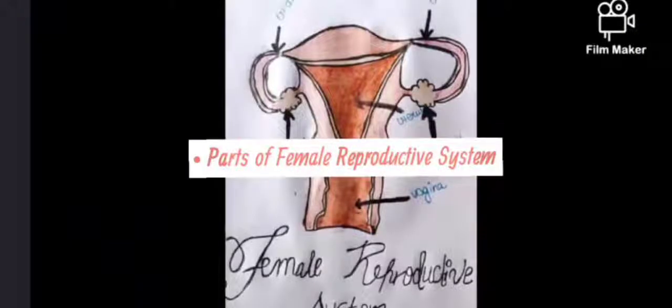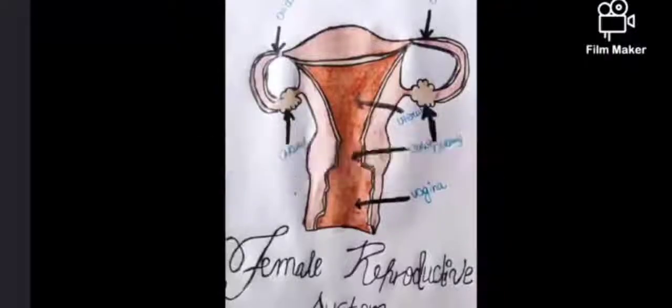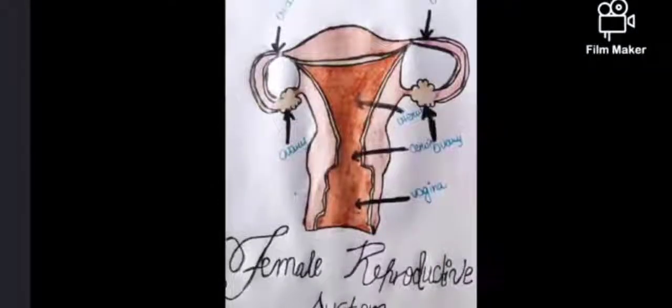Now I would like to explain all the parts of the female reproductive system. First is the ovary, which is the necessary part of the reproductive system. It is a paired, oval-shaped organ located in the abdominal cavity near the kidneys.